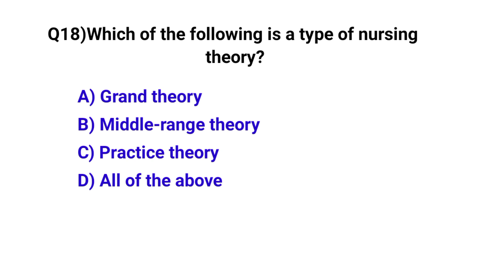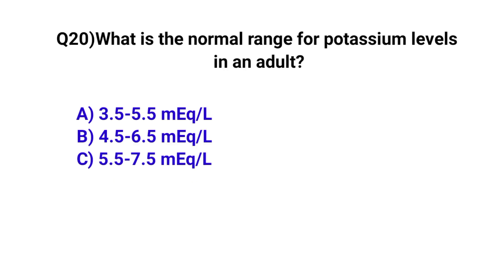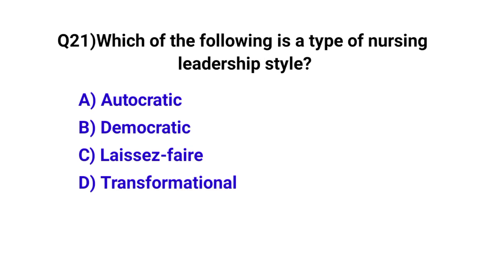Question number eighteen: which of the following is a type of nursing theory? The correct option is D, all of the above. Question number nineteen: what is the normal range for hemoglobin in adults? The correct option is B, 12 to 18 grams. Question number twenty: what is the normal range for potassium level in adults? The correct option is B, 3.5 to 5.5.